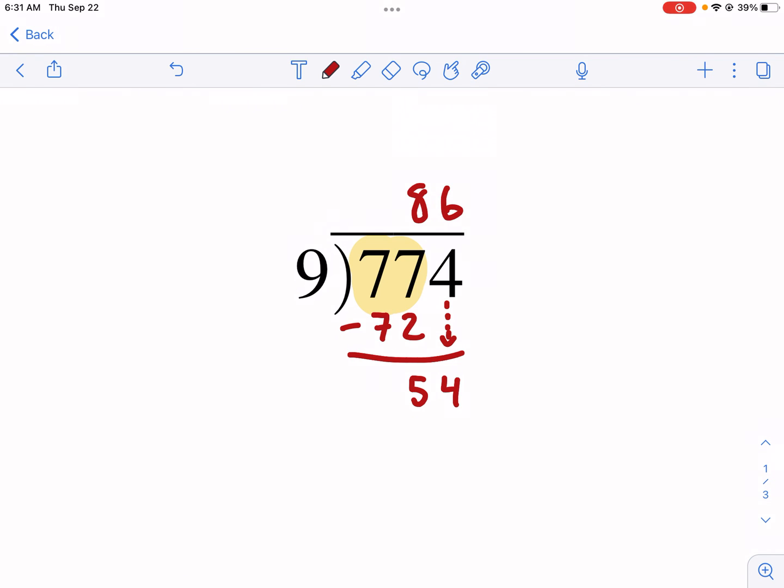And now anytime I write a number up here, in this case, I wrote the 6, I need to do 9 times that 6. That gives me 54. And just as a reminder, just so you see what I'm doing. 9 times that 6 equals that 54. And now I'm going to subtract, find the difference. So 86 is my answer.